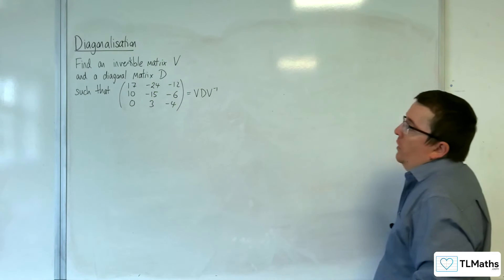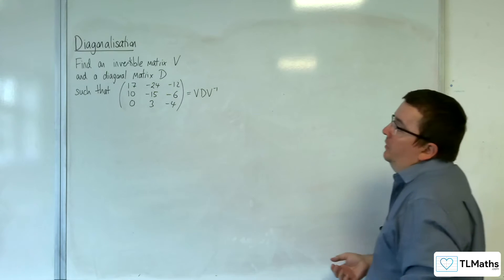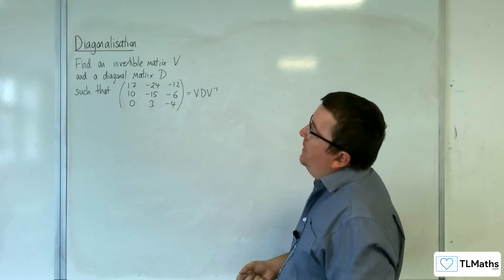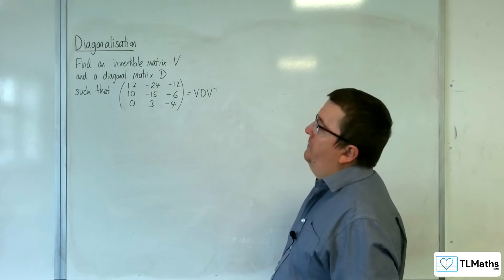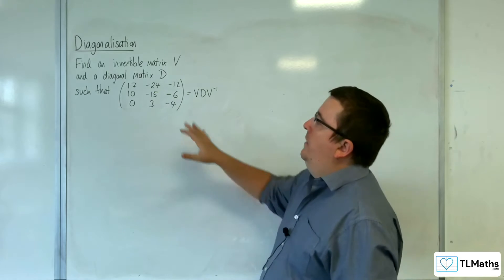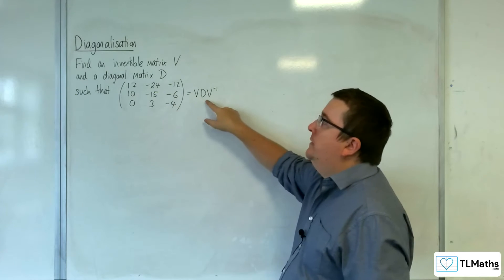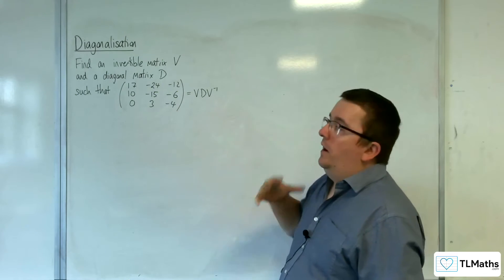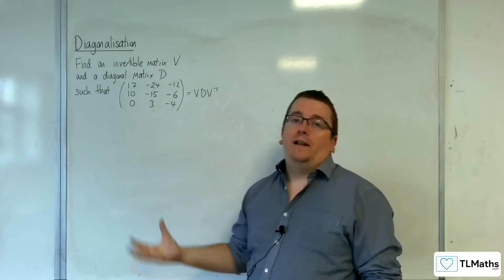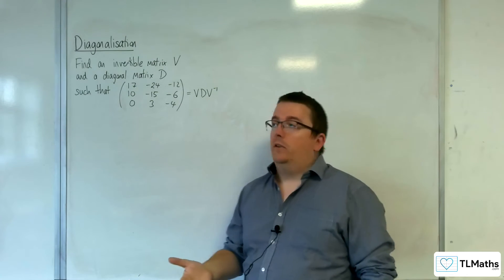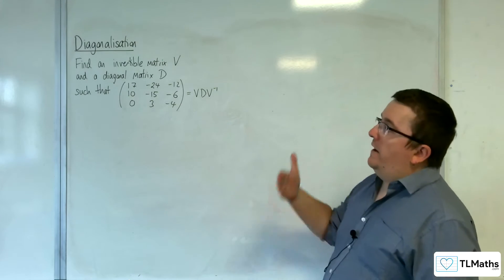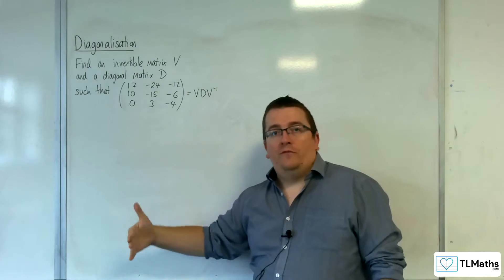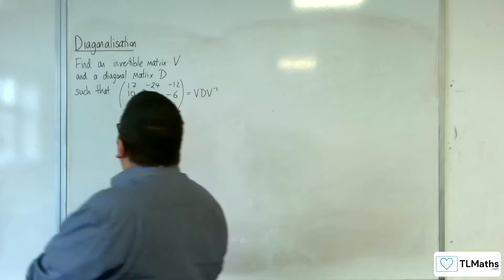In this video, we are going to go through this example. We need to find an invertible matrix V and a diagonal matrix D, such that this matrix is equal to V D V minus 1. In other words, we need to find the eigenvalues and eigenvectors of this matrix, and then write down the appropriate V and D from those.